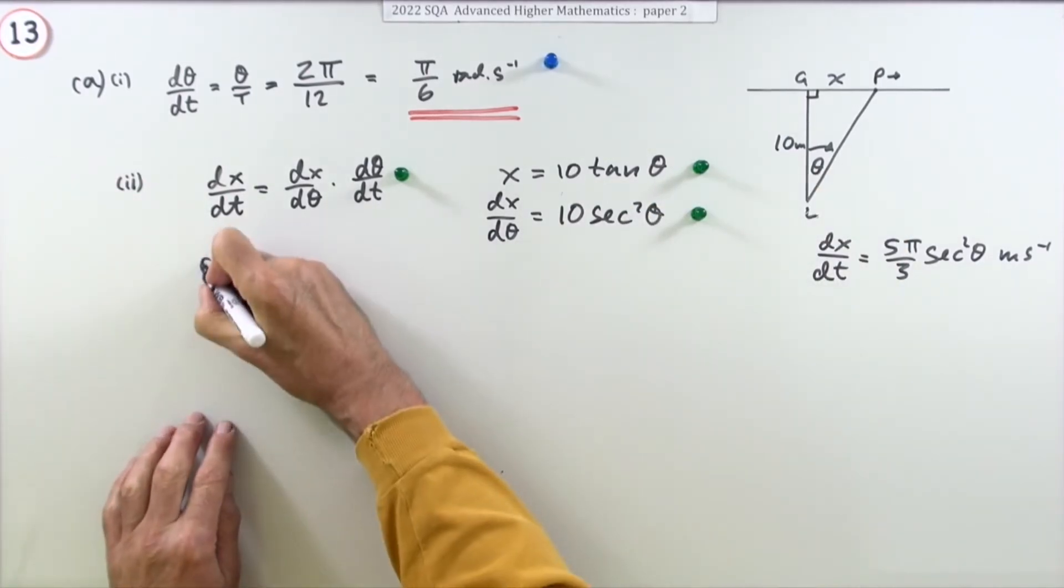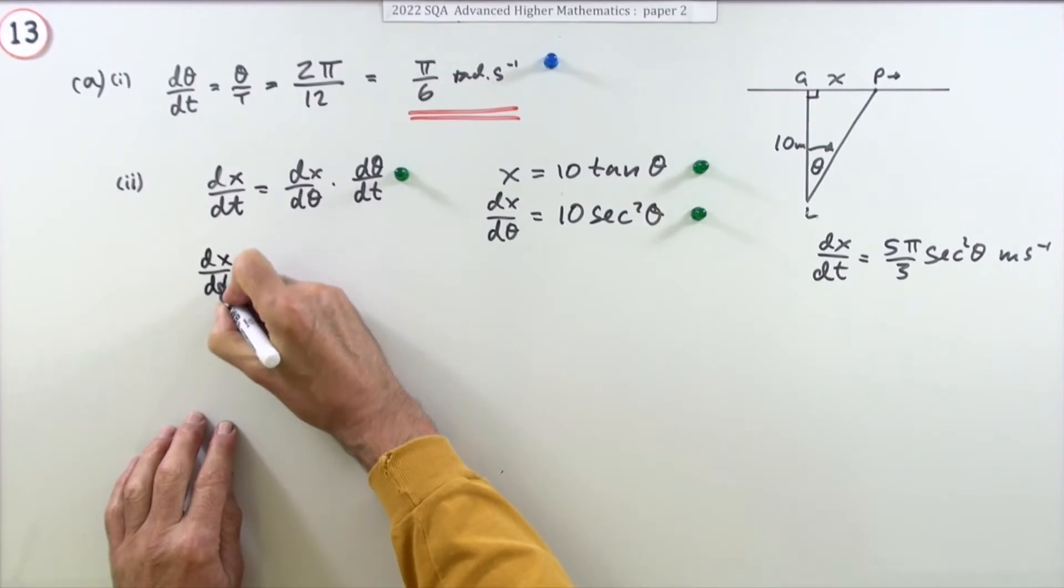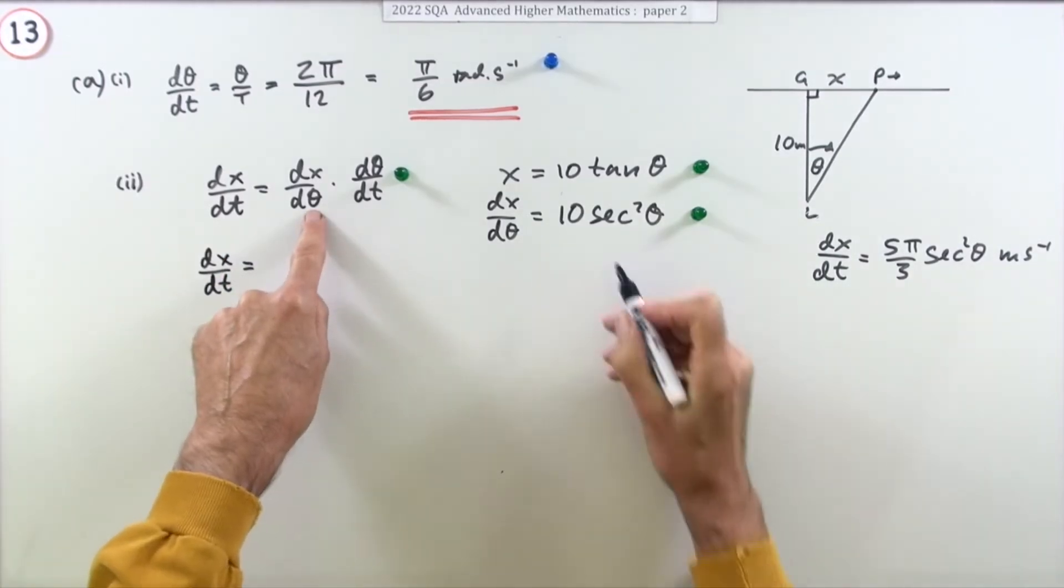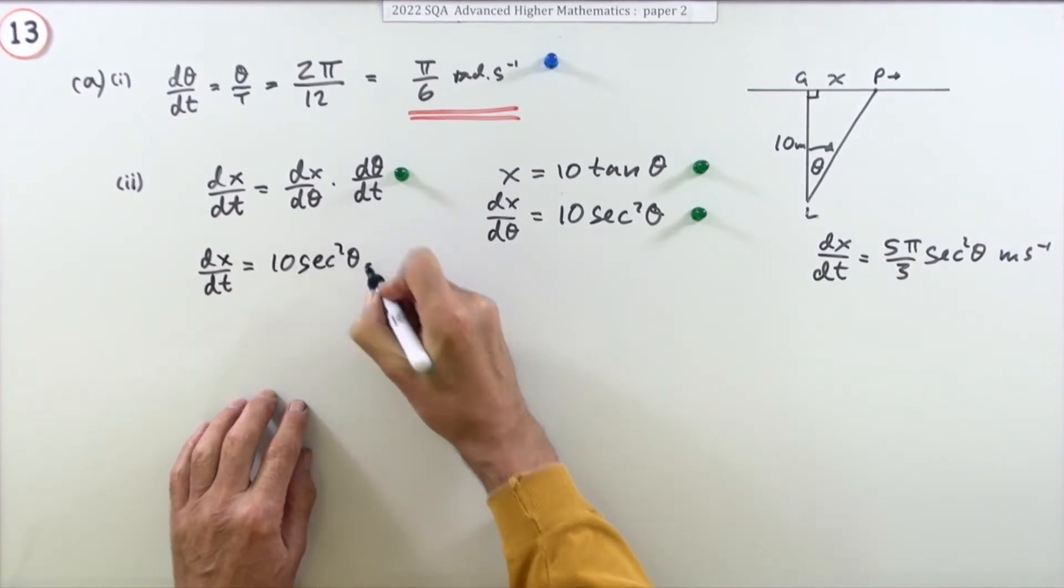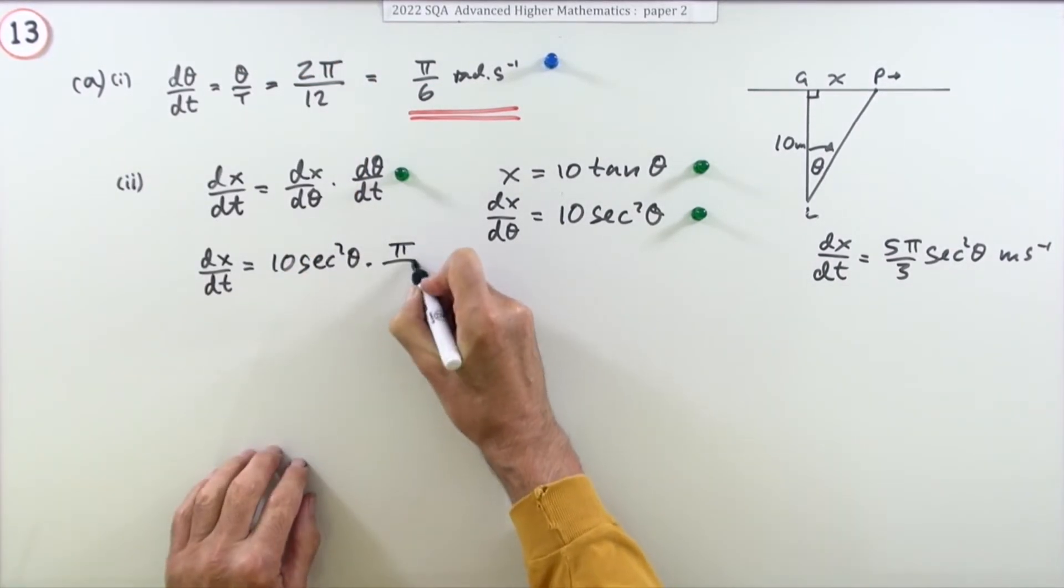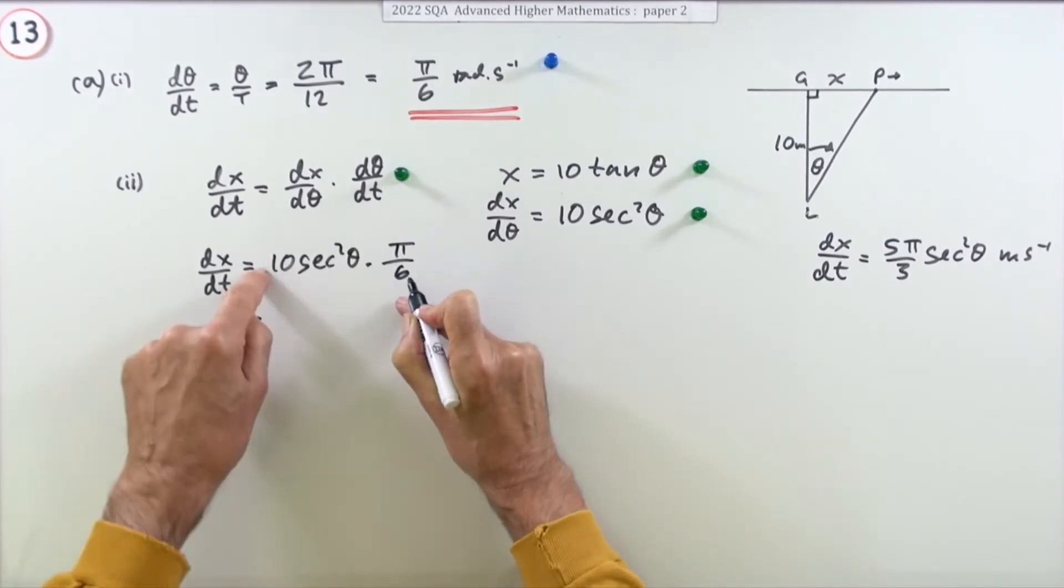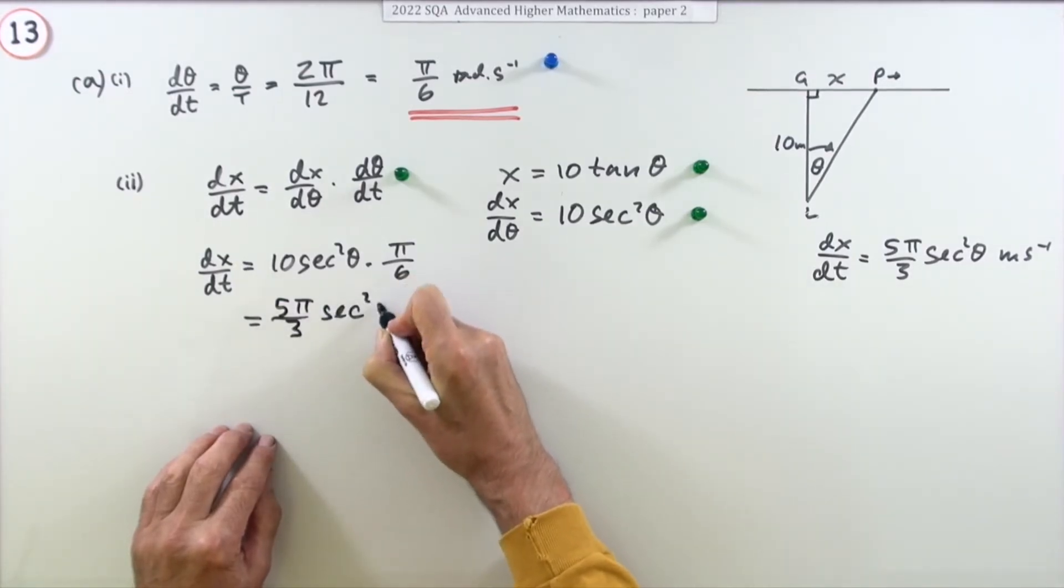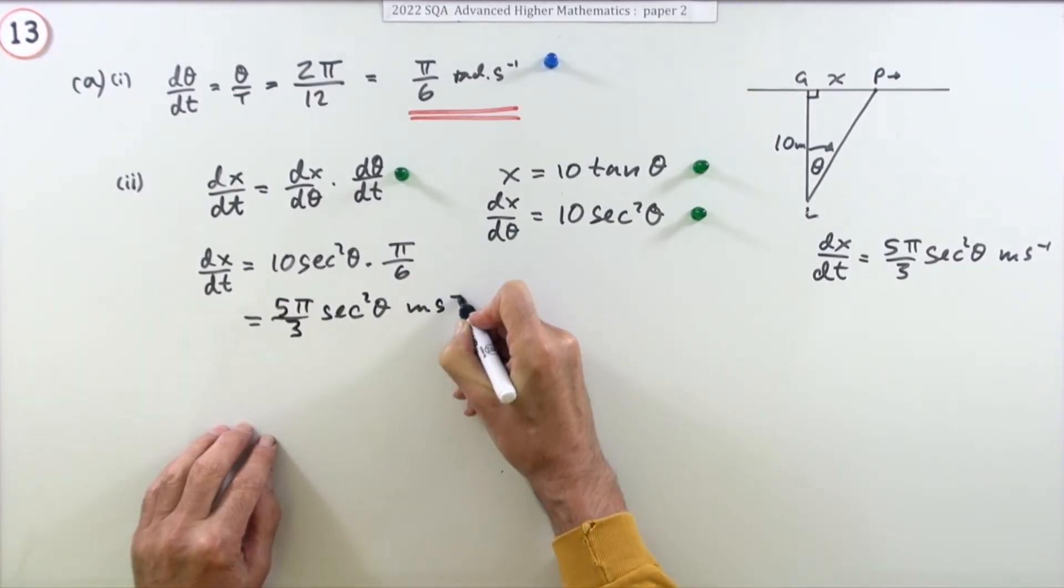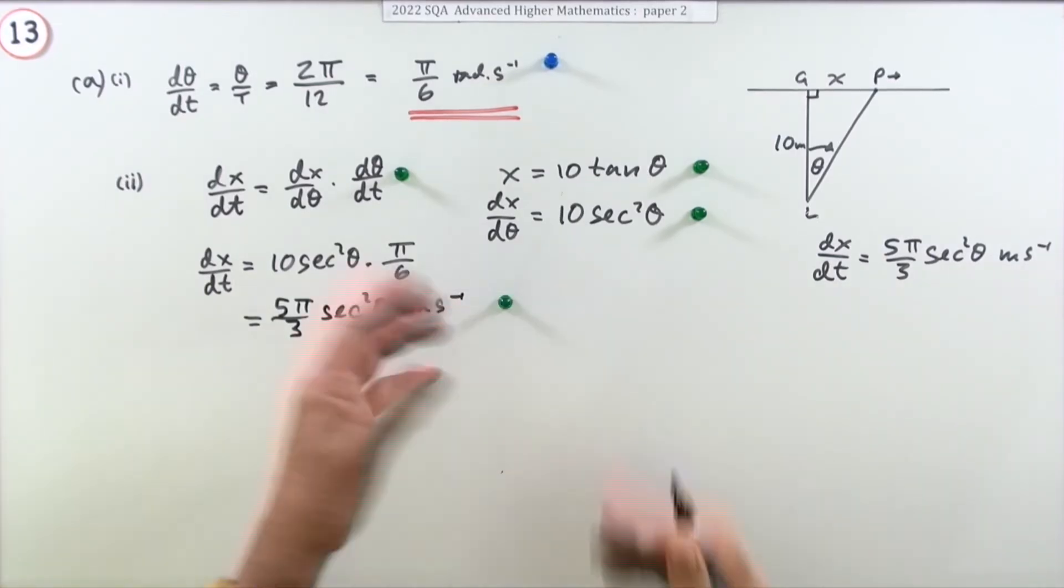Now feed that into this. dx/dt is going to be, well dx/dθ was 10 sec² θ, you knew dθ/dt, that was π/6. Well it doesn't take an awful lot just to cancel that down to 5/3, so it'll be 5π/3 sec² θ, and that'll be meters per second. There's four marks.